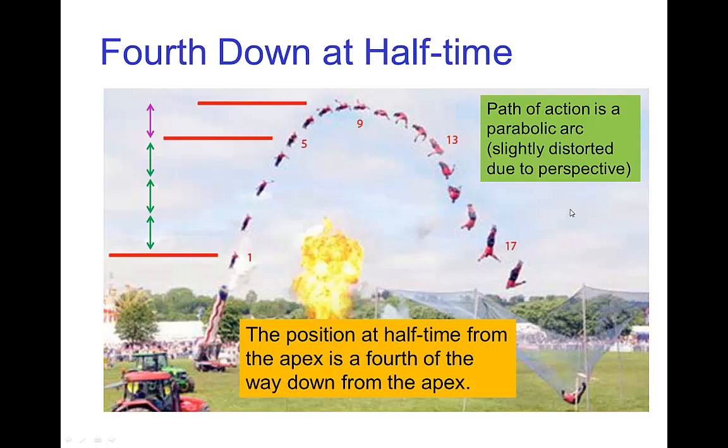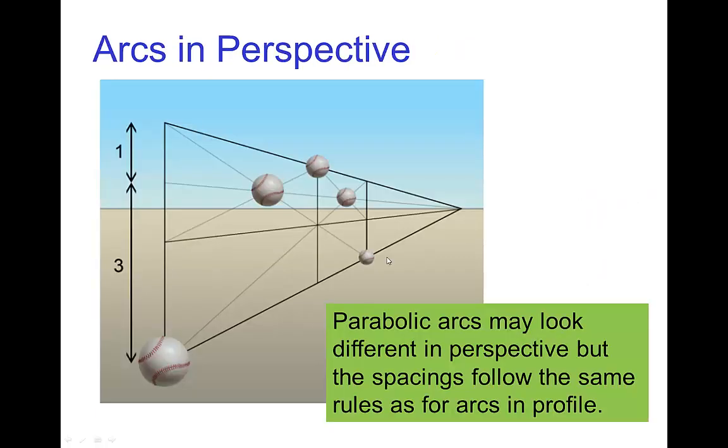Now, this picture is a little bit distorted because we're not seeing the motion in profile. So, there's a little bit of distortion due to perspective. Now, we can account for that. If we want to do this more carefully, you see the spacings that you have when something goes up into the air and then comes back down. The fourth down at half time would tell you that these positions which are halfway in time between the apex and these two bottom positions should be a fourth of the way down. So, this is what the parabolic arc looks like in perspective.